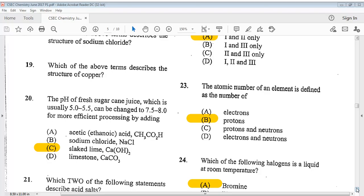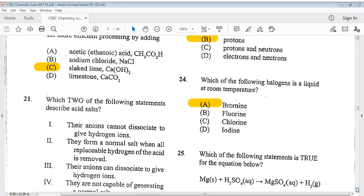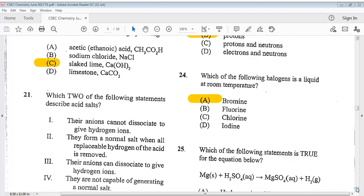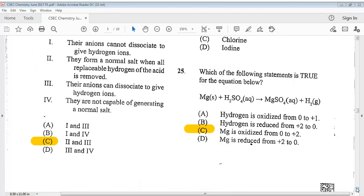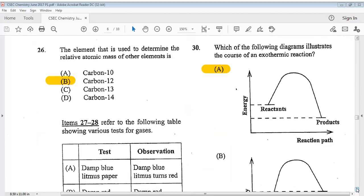Question 23. The atomic number of an element is defined as a number of? The answer is B, protons. Question 24. Which of the following halogens is a liquid at room temperature? The answer is A, bromine. Question 25 says, which of the following statements is true for the equation below? You can take a look at the equation below. The answer is C. Let's go on to question 26. The element that is used to determine the relative atomic mass of other elements is? The answer is B, carbon-12.